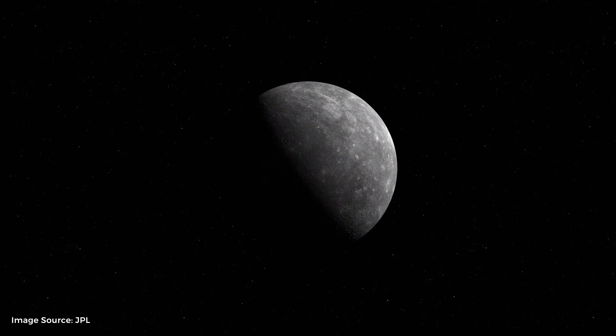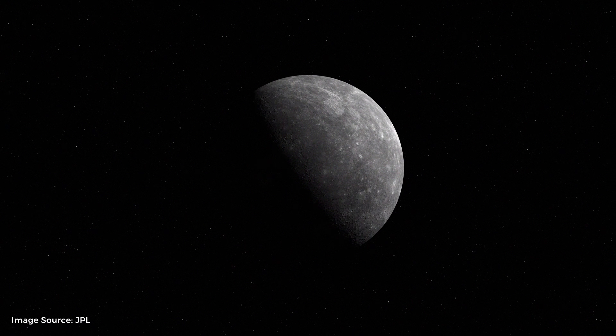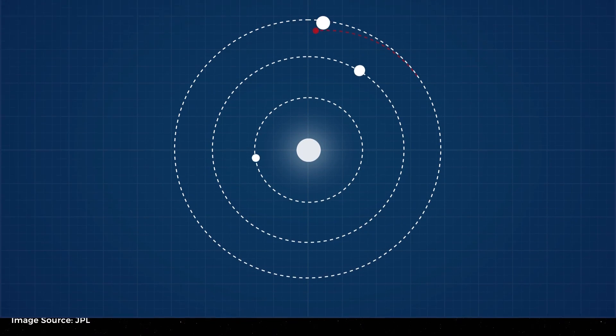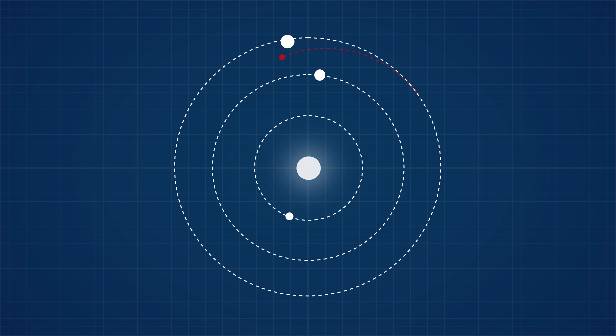This mission gave humankind many of its first experiences with space travel. It was the first time a gravity assist had ever been performed using a planet's gravity. It was the first time two planets had been visited up close in a single mission, and it was the first time solar pressure had been used to control a spacecraft's attitude.